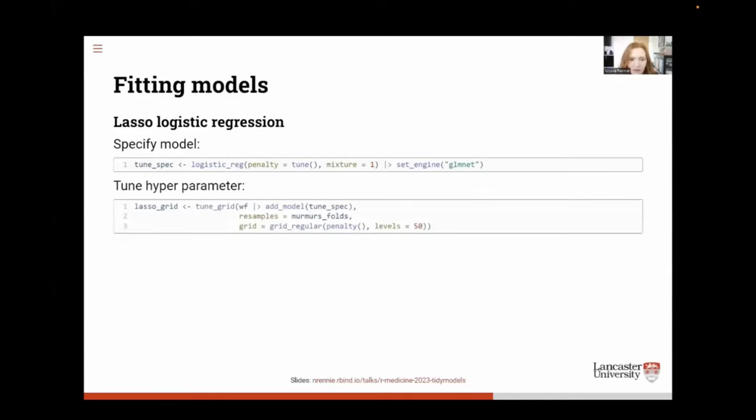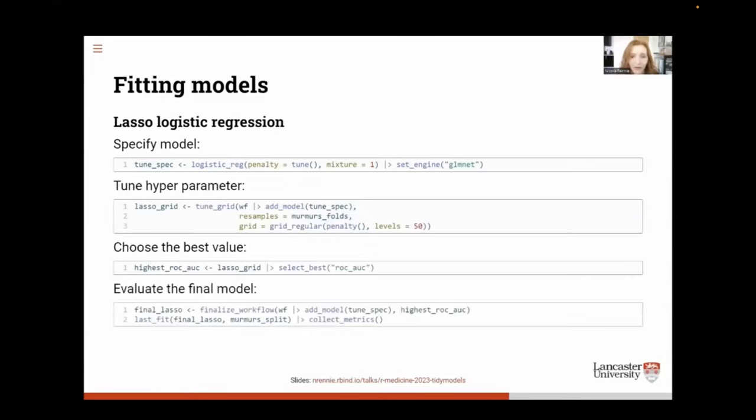So we can tune this hyperparameter using a grid search. It's not a parameter that we can calculate from the data. We essentially have to try lots of different values and choose the one that gives the best model performance. And I think this is another example of where tidy models feels very user friendly. Things are named well. So if you want to select the value that gives you the best results, we use the select best function. And once we've chosen the best value of the tuning parameter, we can use it to fit the final model.